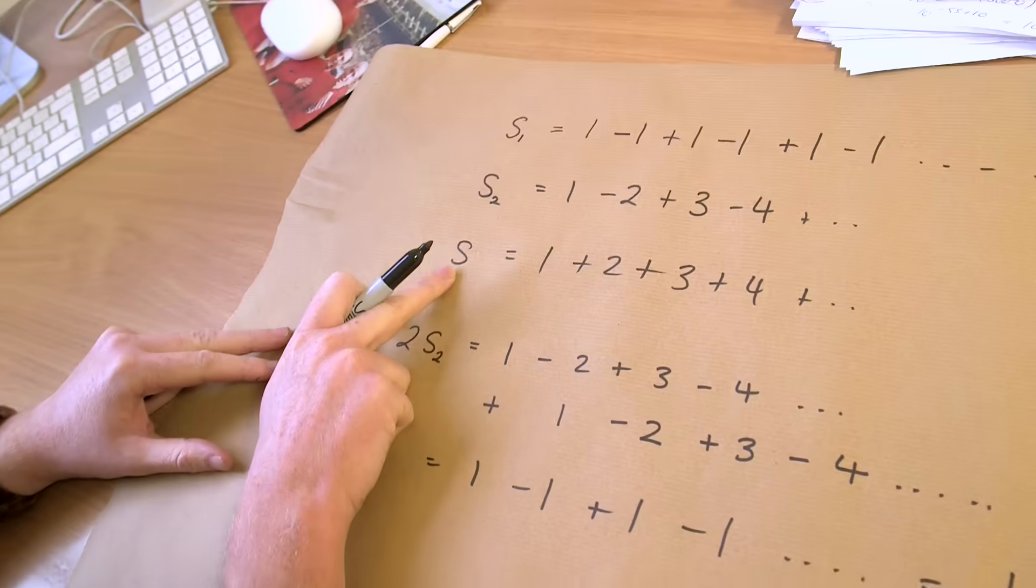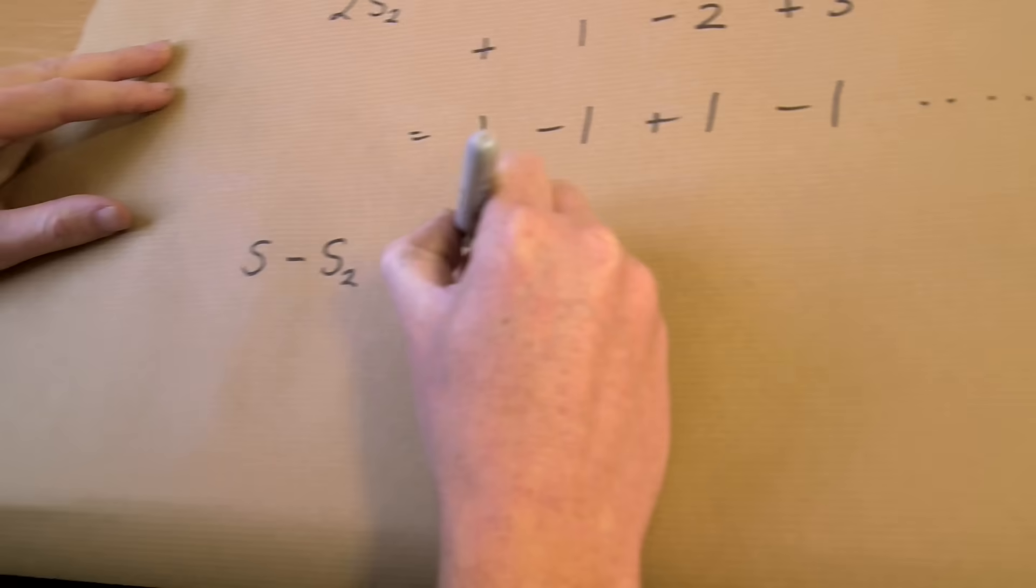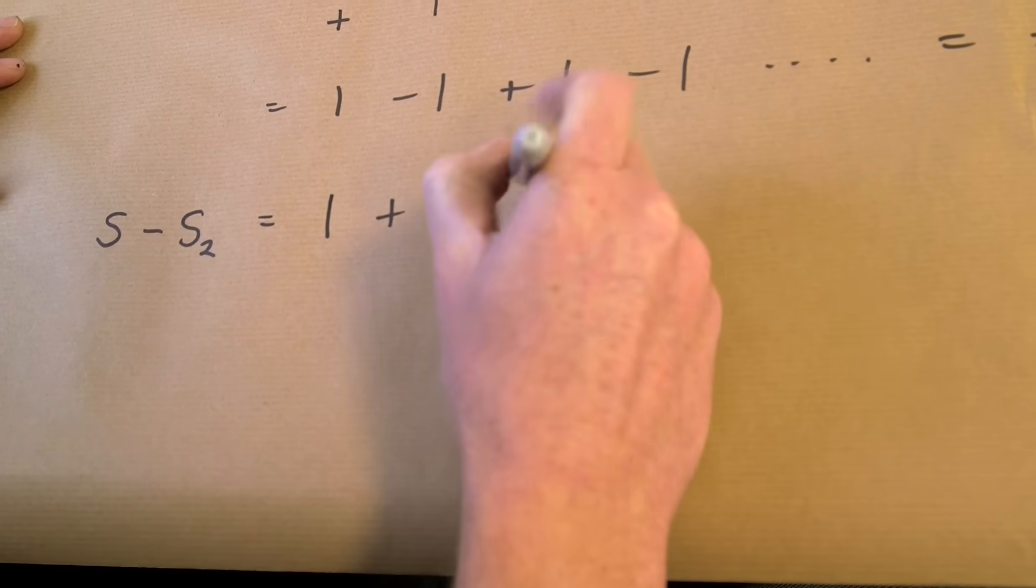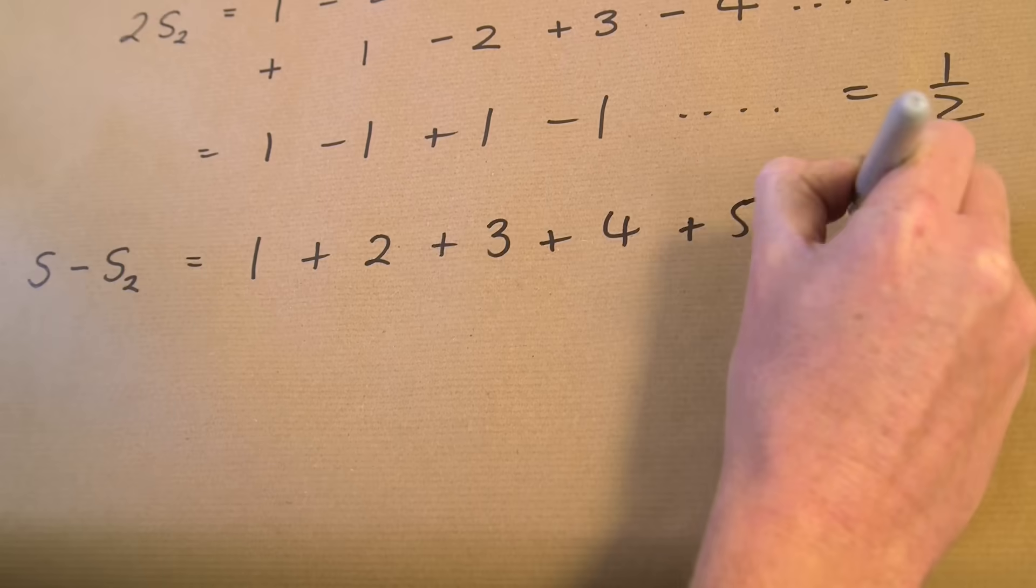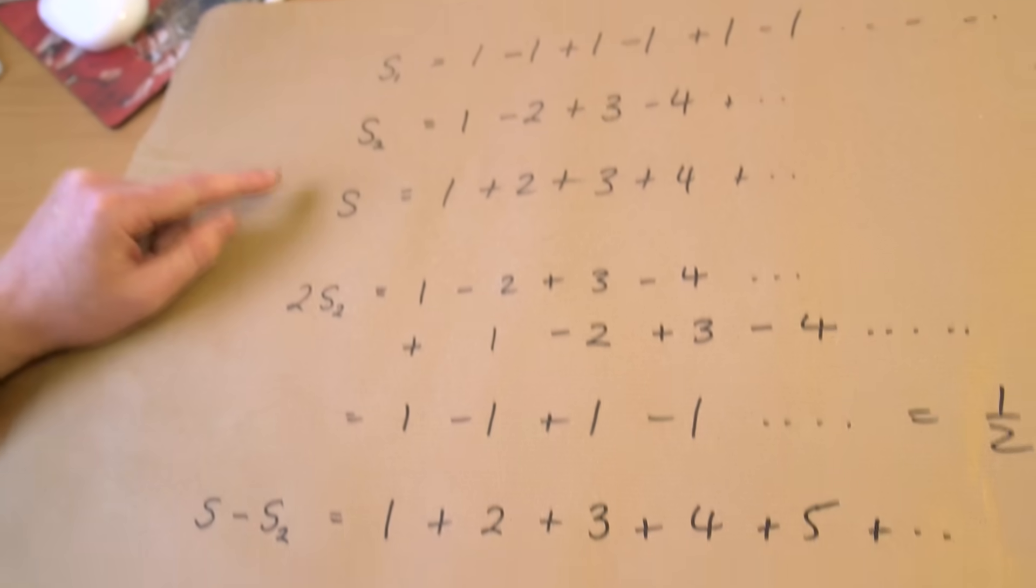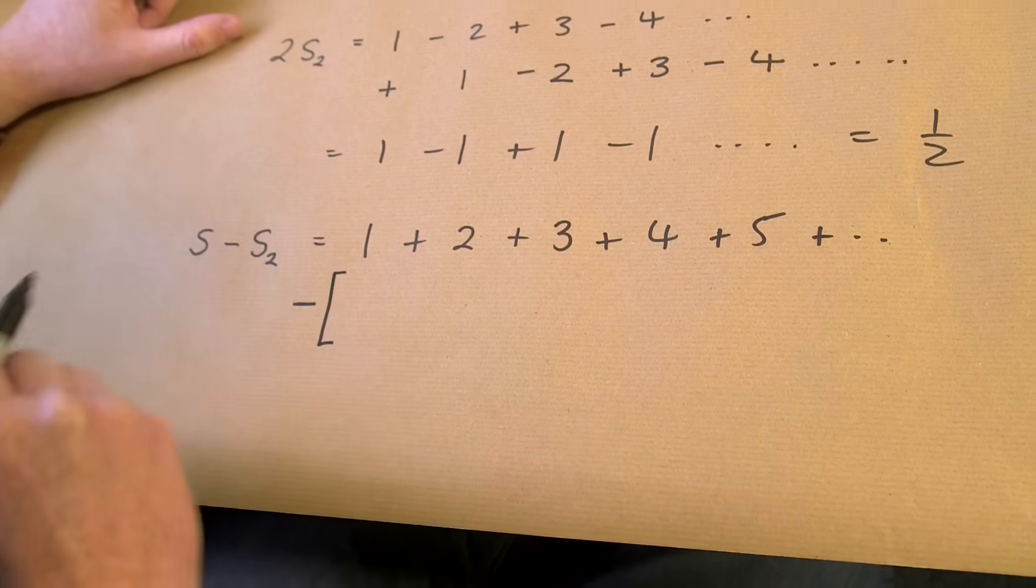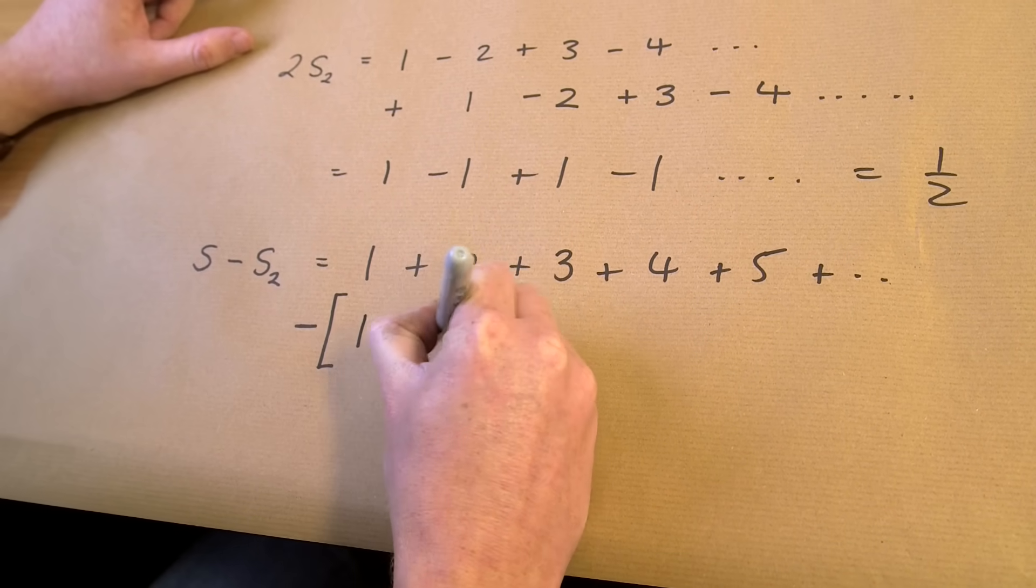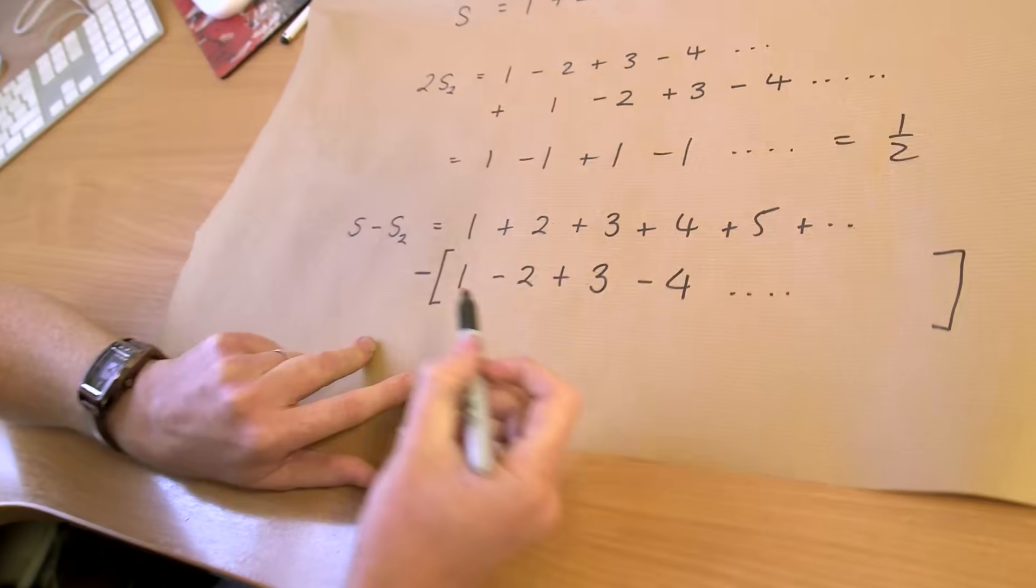Now I have everything I need to prove this crazy minus a twelfth thing. So let's do it. I'm going to take this one and I'm going to subtract this one. So I'm going to subtract S2 from S. Let's write them out again. So I'm going to write our S first, which is 1 plus 2 plus 3 plus 4 plus 5 and so on. And I'm going to subtract S2. So that's minus. And let me just put a bracket in now because I'm going to minus all of this. 1 minus 2 plus 3 minus 4 and so on.